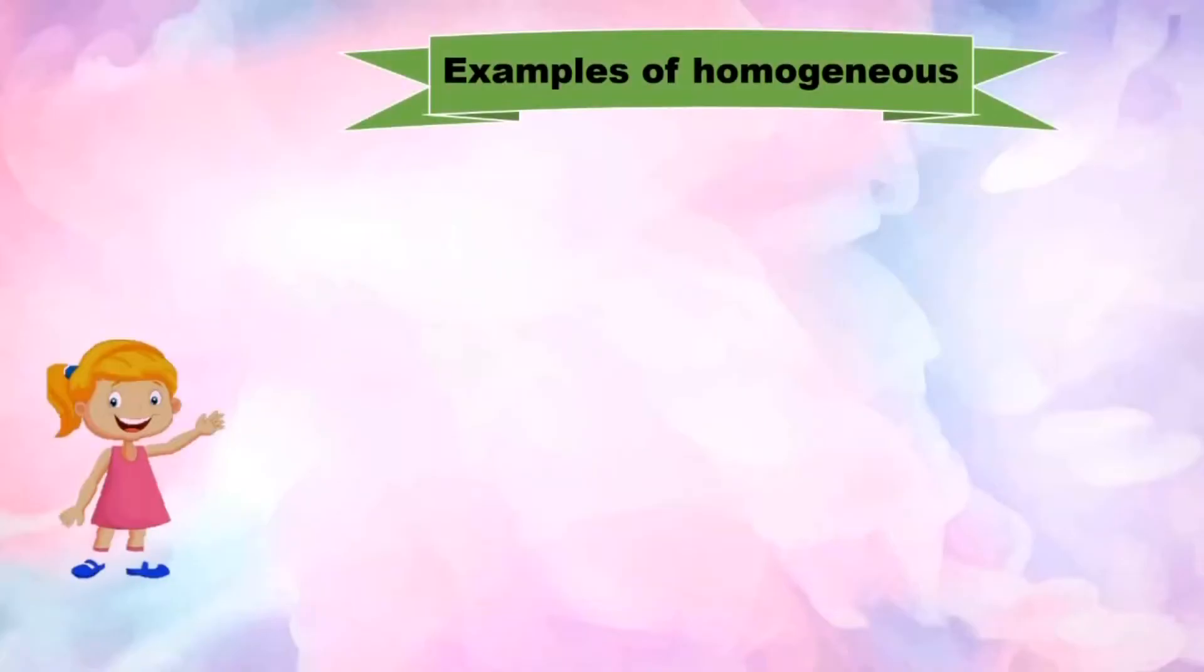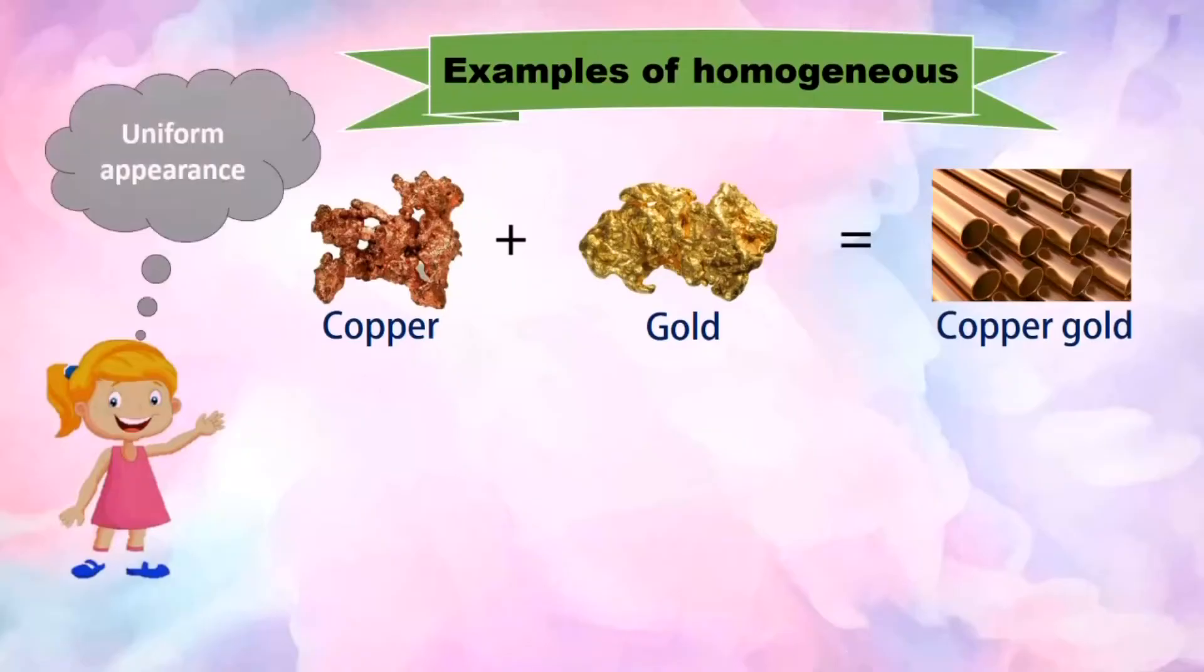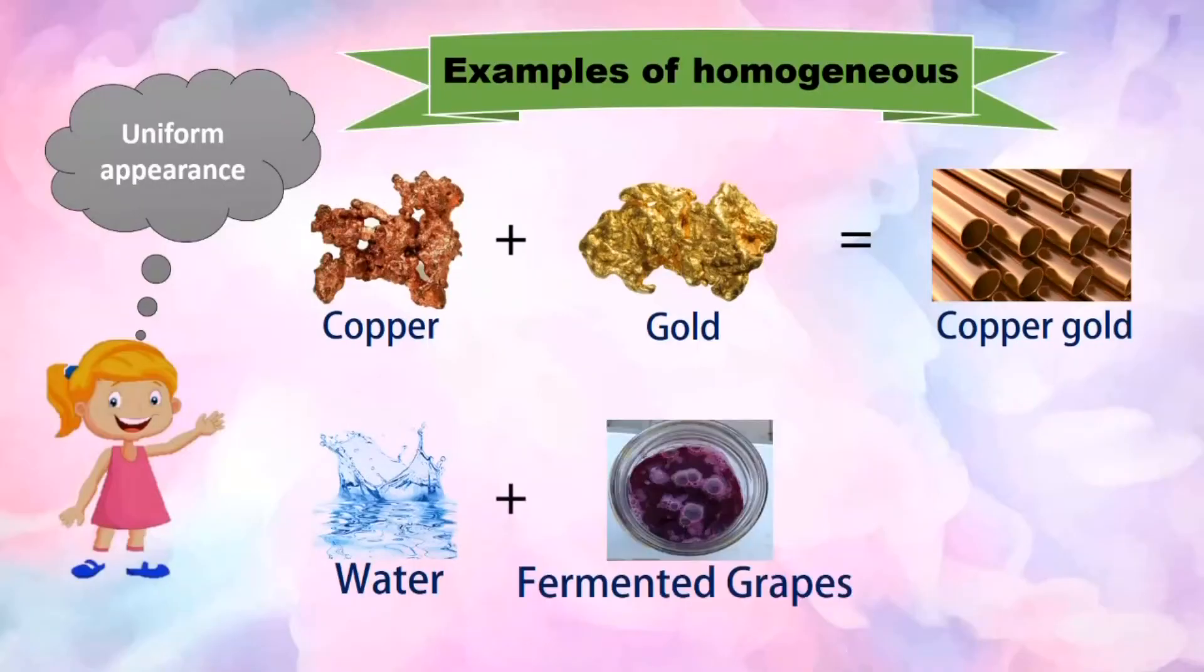Copper, which is solid, combined with gold, which is also solid, yields copper-gold alloy which appears uniform to our eyes. We cannot identify copper from gold in this mixture. Another example is water, which is liquid, mixed with fermented grapes, which is also liquid, producing wine. Wine looks uniform to our eyes; we cannot recognize the individual components that we mixed.